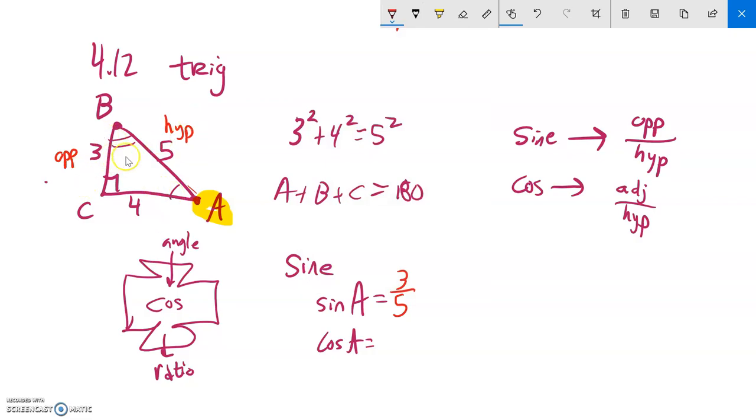So hypotenuse is always 5, always opposite the right angle. If this is angle A, this side right here that's not the hypotenuse is adjacent to that angle. So cosine, that would be 4 fifths.